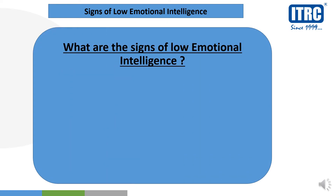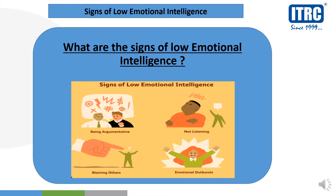Signs of low emotional intelligence. How do we say that a person has low emotional intelligence? One sign is being argumentative — arguing over every little thing even when it is not necessary, meaning you cannot control your emotions. Another sign is not listening — a person with low emotional intelligence will not listen to others.